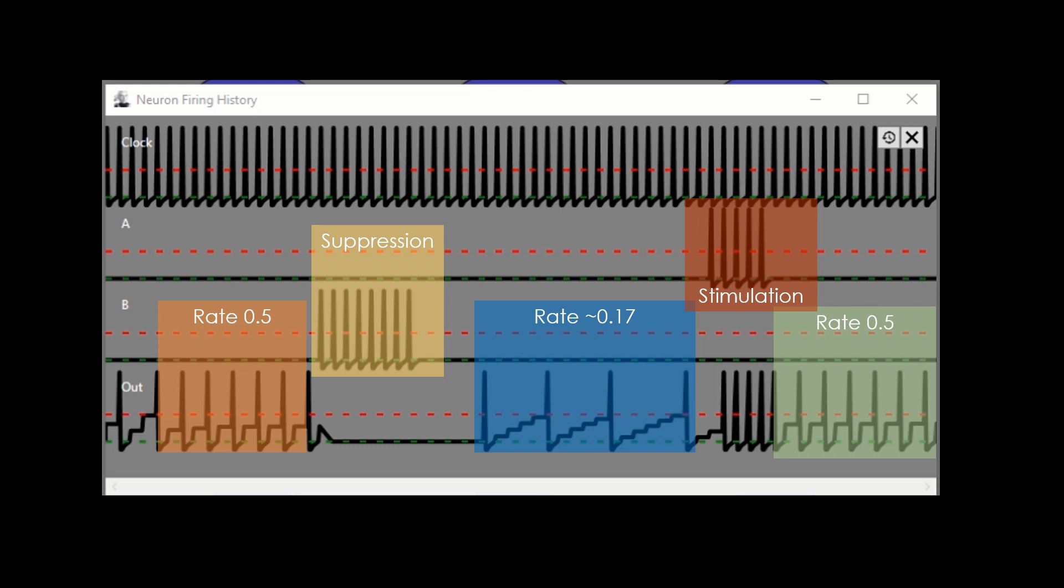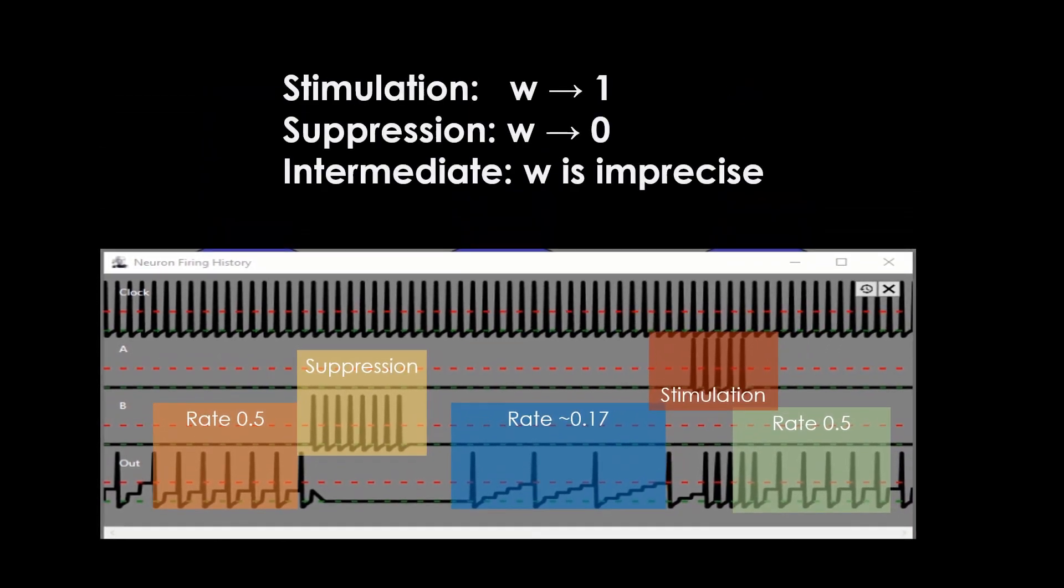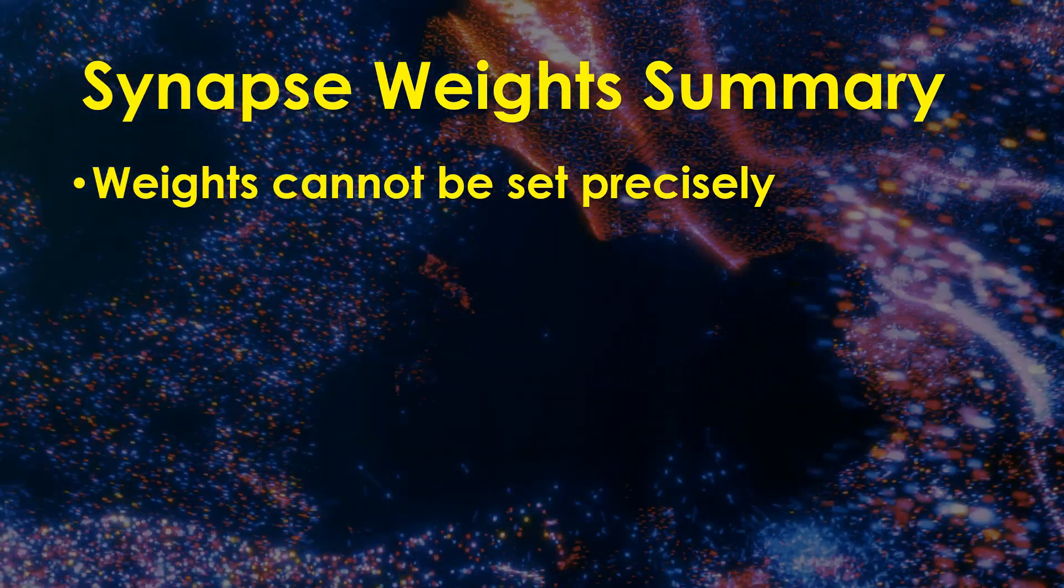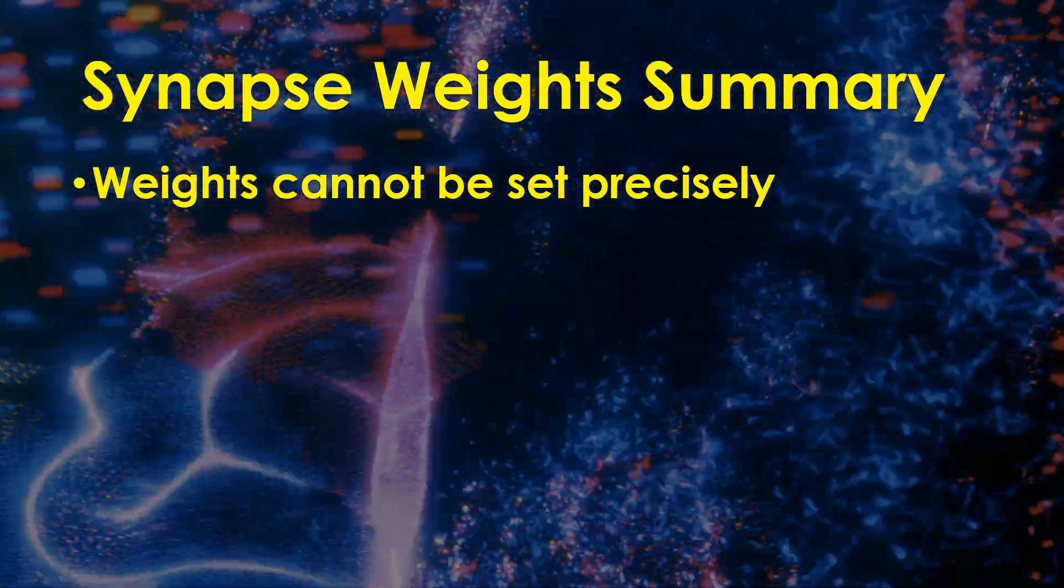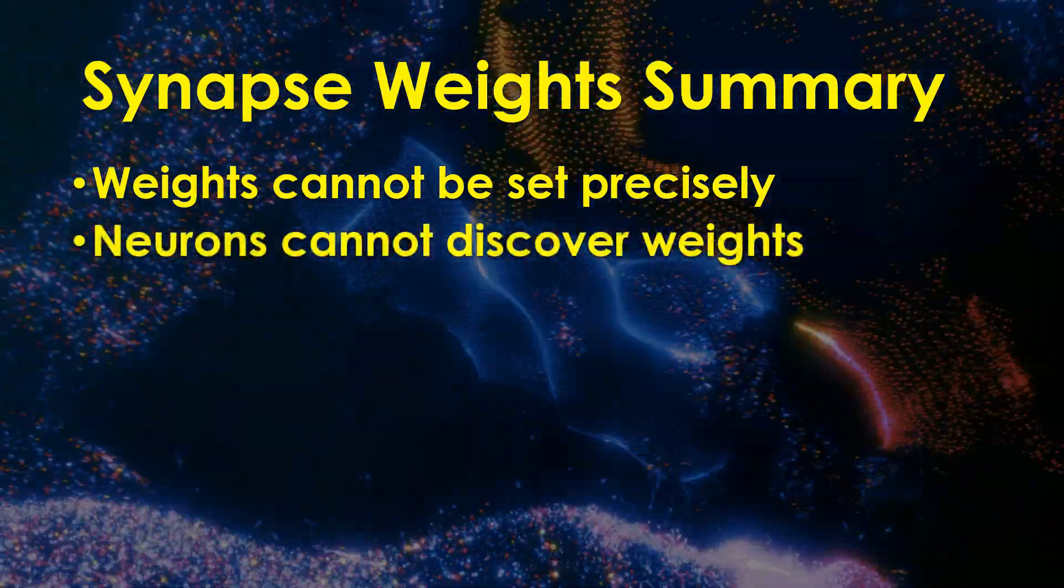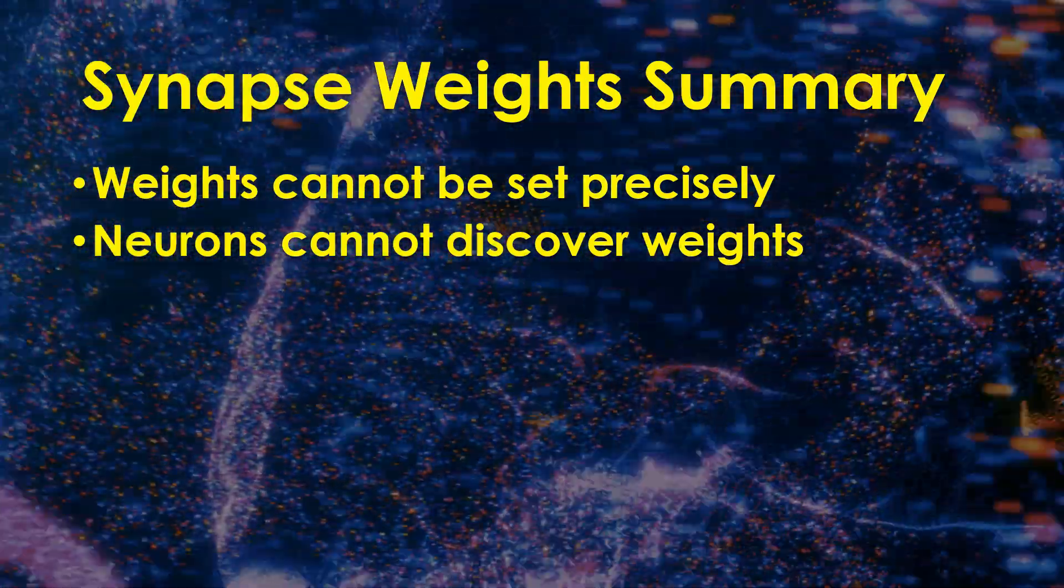With sufficient stimulation, you can be pretty sure that the synapse weight will be near 1, and with sufficient suppression it will approach 0. In between, though, the synapse weights are imprecise. There is no way to set a synapse weight to any specific value like 0.5 and greater precision is even further out of reach. Finally, there is no way for the neuron to discover the precise weight of a synapse.